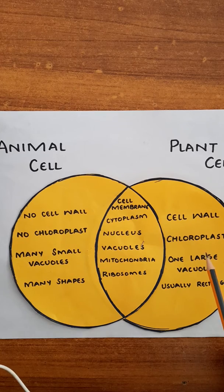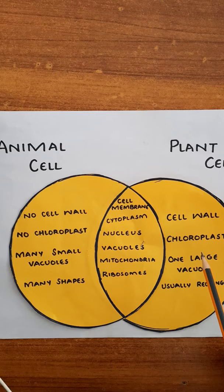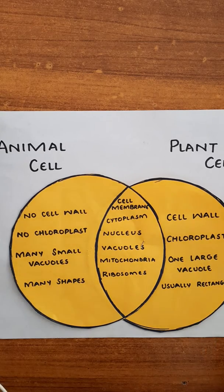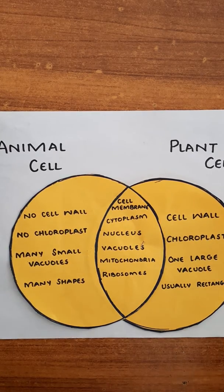Remember: photosynthesis is the process by which plants make their own food. This is the main difference which makes a plant cell different from the animal cell, and why plants are different from animals — because plants can make their own food since they have chloroplasts.